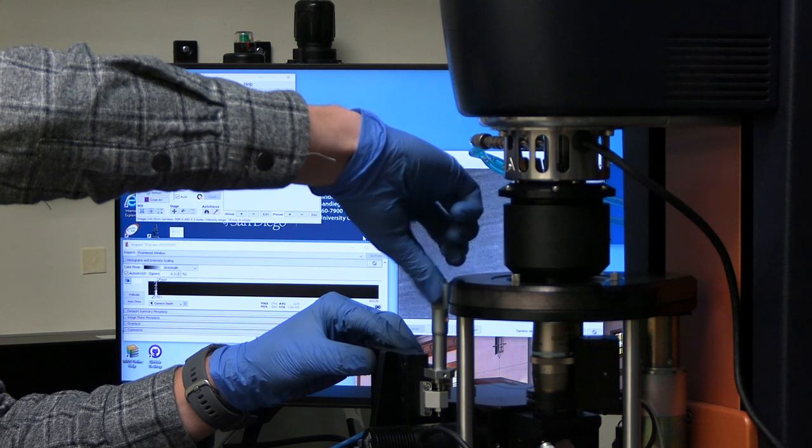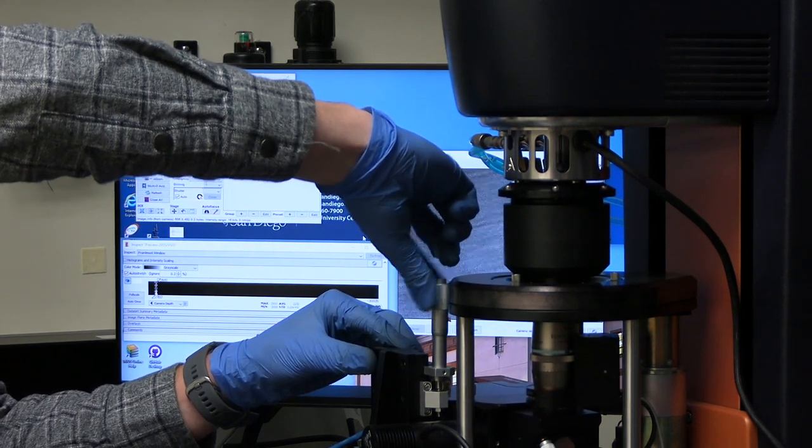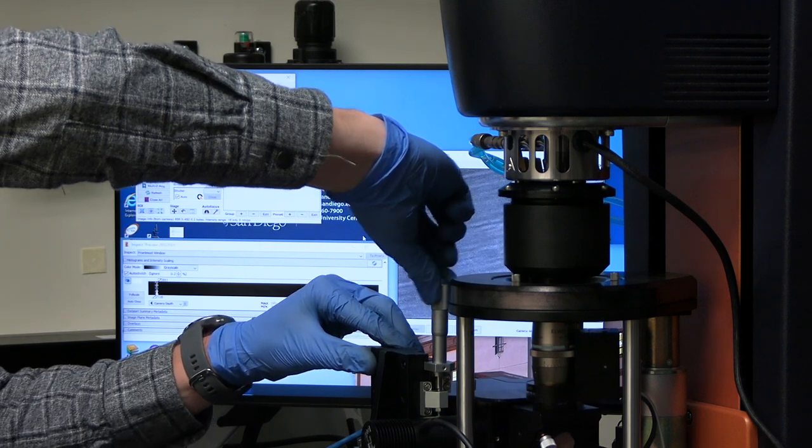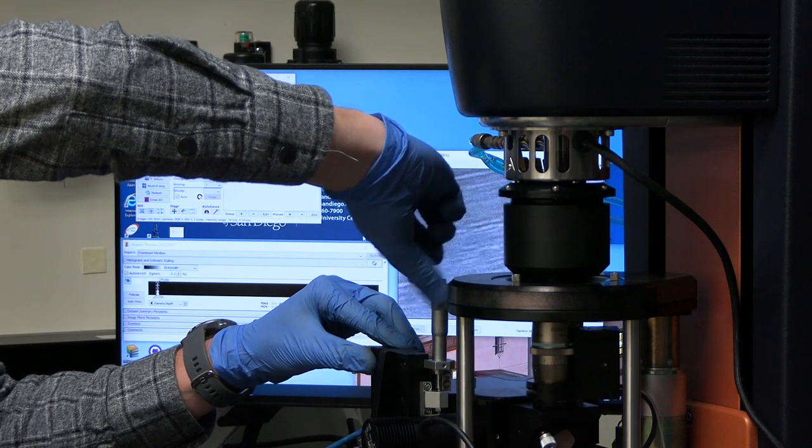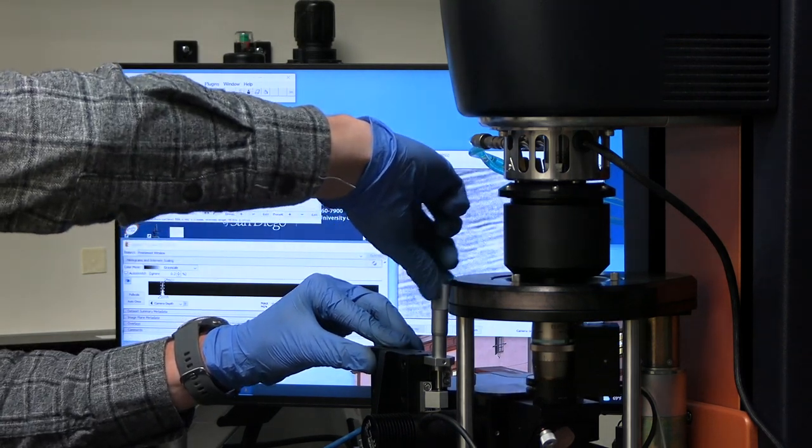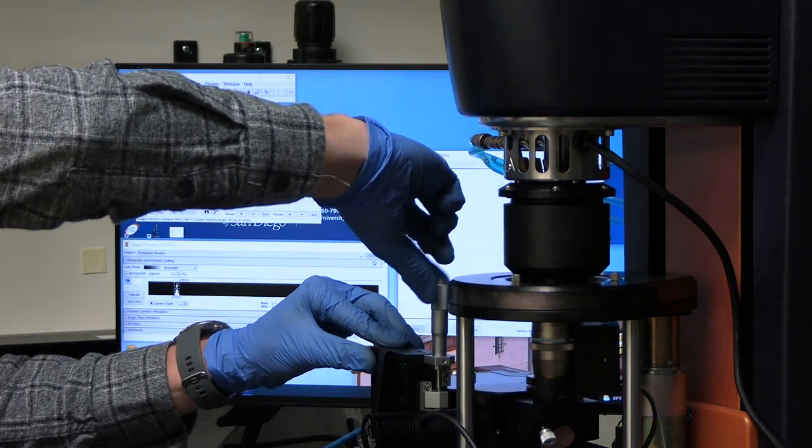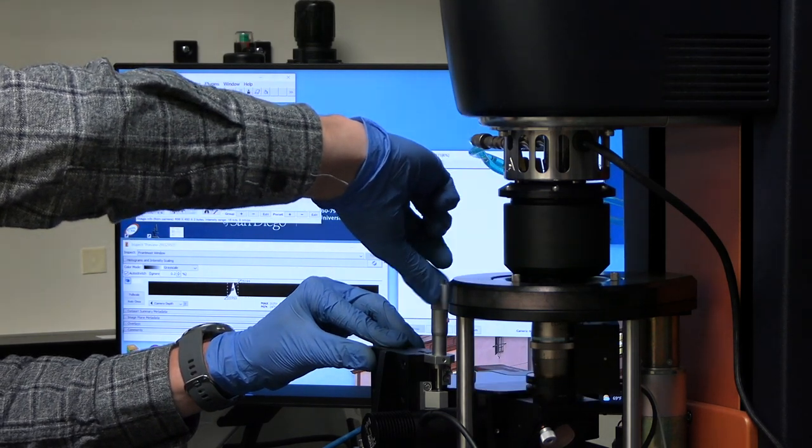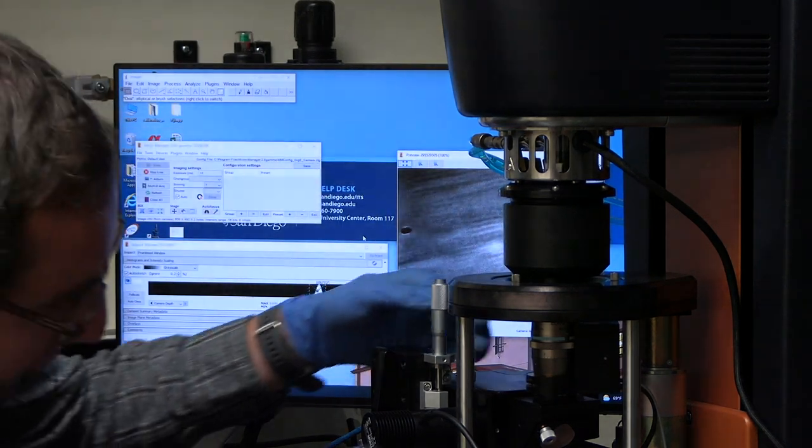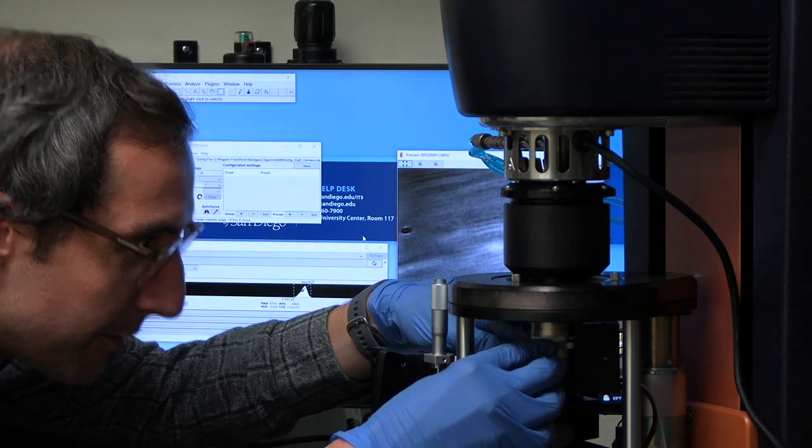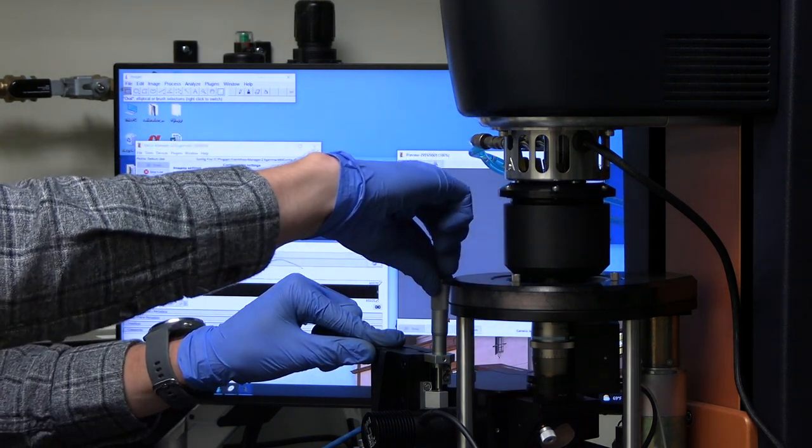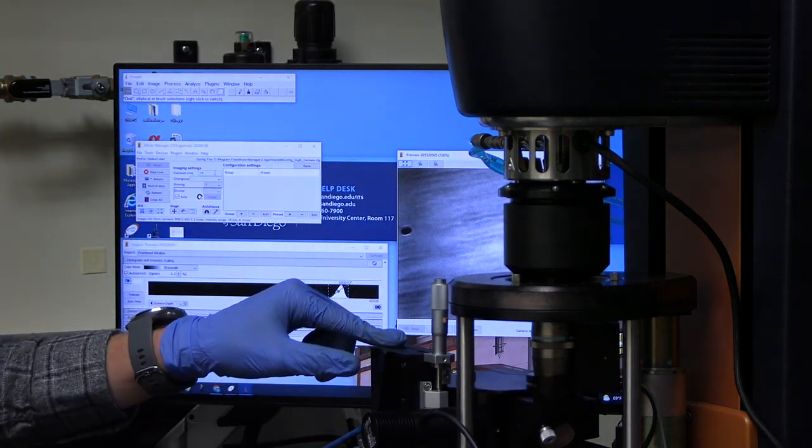I can hit Live. And this translation stage here, I can use to position the objective. So I'm rotating this clockwise to bring the sample into focus. As I bring it into focus, it might need to turn down the intensity.